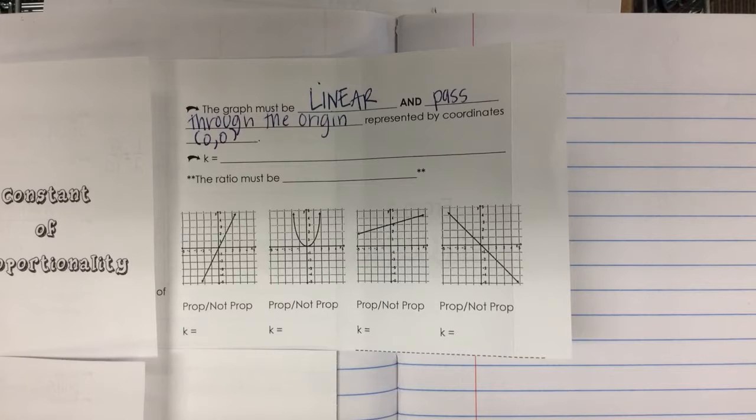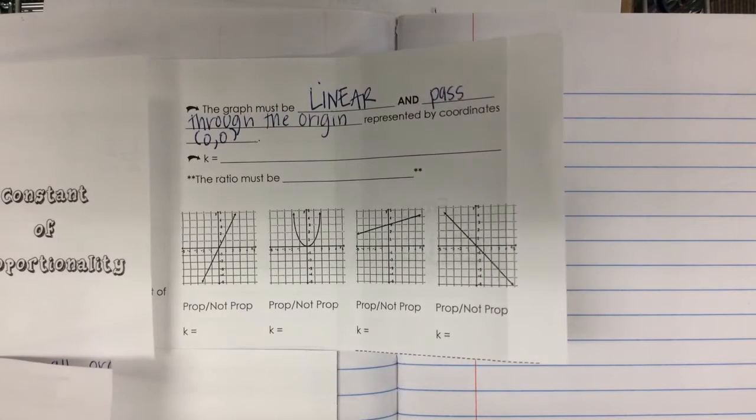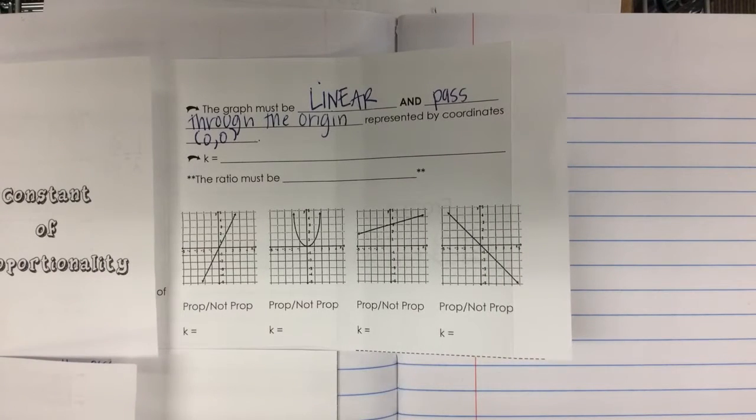What did we learn yesterday that K represented? The Y value, or the Y value over X value. Good. The Y value over the X value.